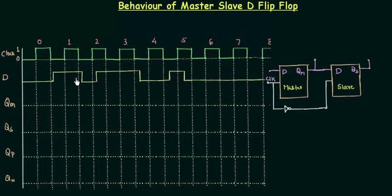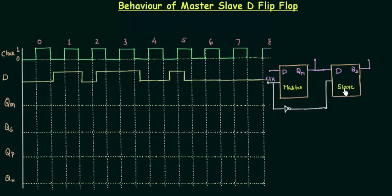Now let's discuss master-slave operation. You have already learned about this in a separate presentation on the JK flip-flop. A master-slave flip-flop consists of two flip-flops: the master and the slave. The clock is given to the master, but the same clock is inverted using a NOT gate and then given to the slave. The greatest advantage of this configuration is toggling instead of race-around condition, because when the master is operational the slave is not, and vice versa.